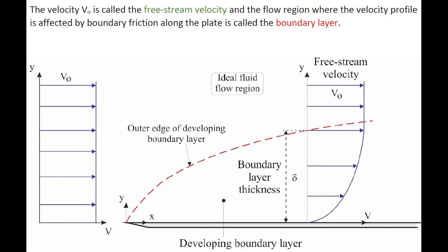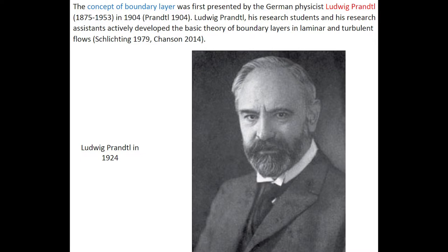The velocity V0 is called the free-stream velocity, and the flow region where the velocity profile is affected by boundary friction along the plate is called the boundary layer. The concept of boundary layer was first presented by the German physicist Ludwig Prandtl in 1904.